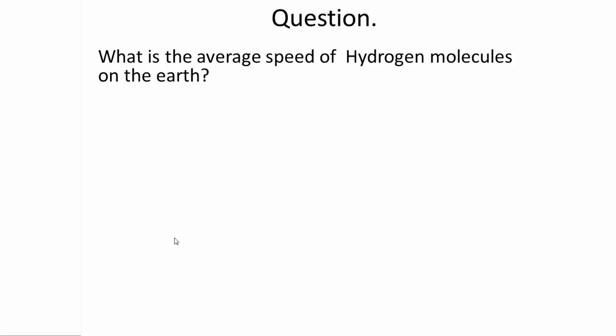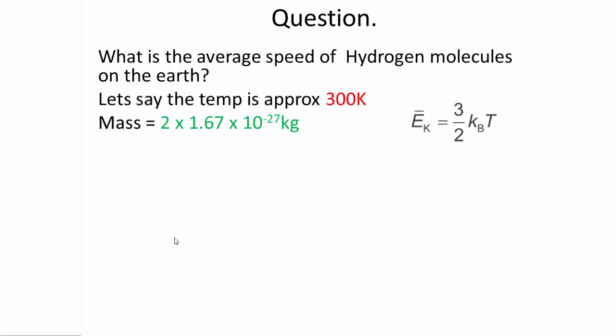Now let's look at a question. What is the average speed of hydrogen molecules on the Earth? Let's say the temperature of the Earth is around 300 Kelvin. The mass of a hydrogen molecule is, let's say, 2 times 1.67 times 10 to the negative 27 kilograms, because it's 2 protons.